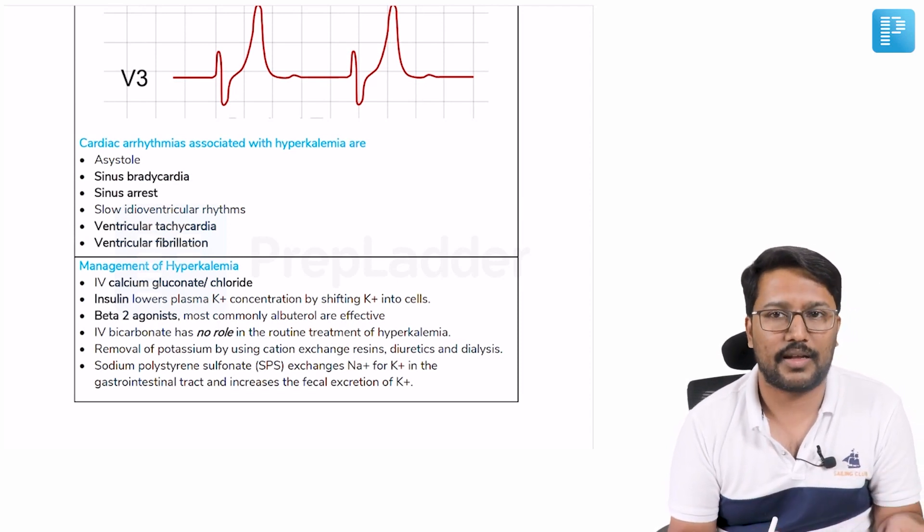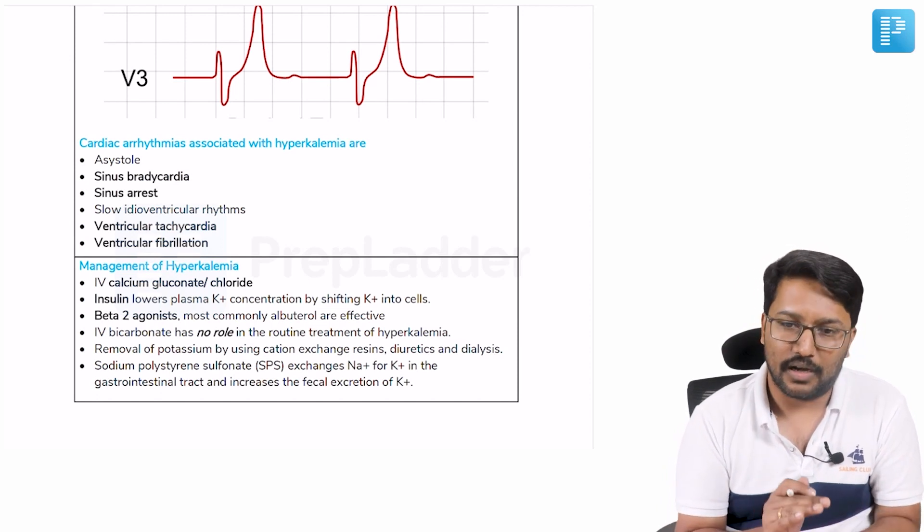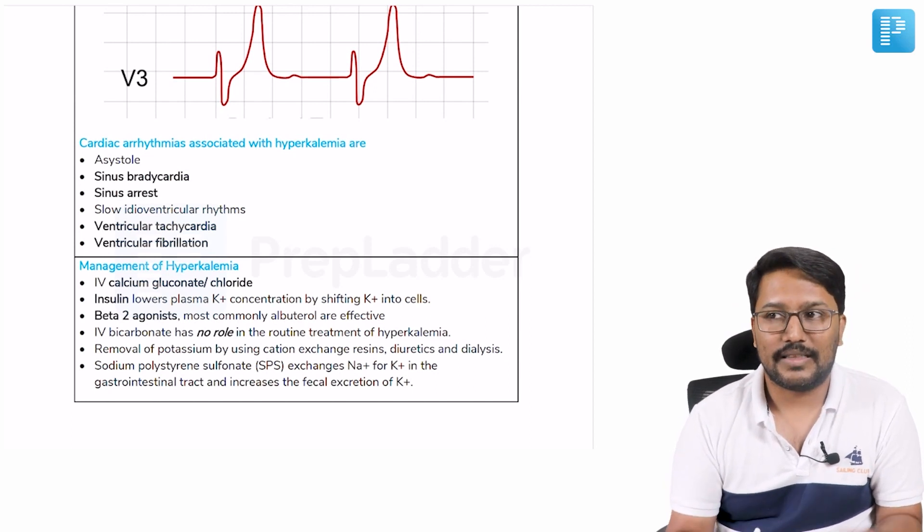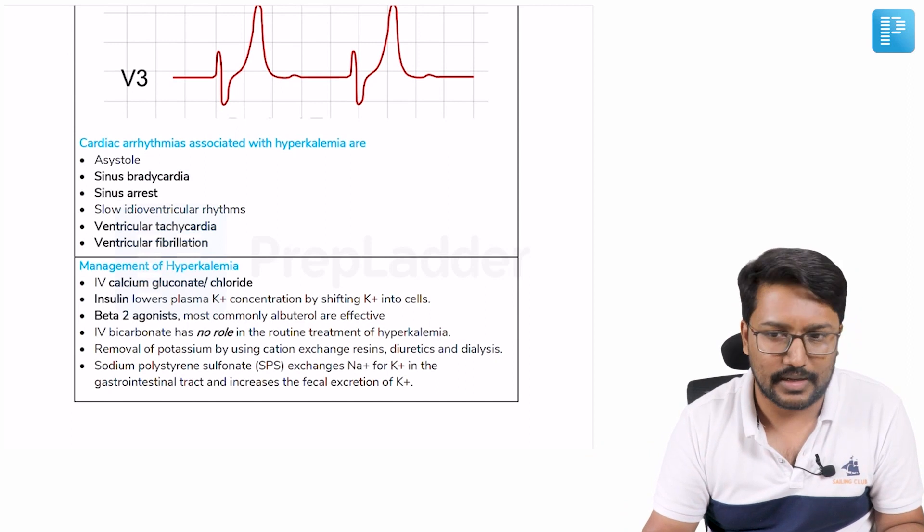First thing would be to offer anti-hyperkalemia measures like calcium gluconate, dextrose with insulin, beta agonist nebulization, and potassium binding resins. When these measures fail, you think of initiation of dialysis.